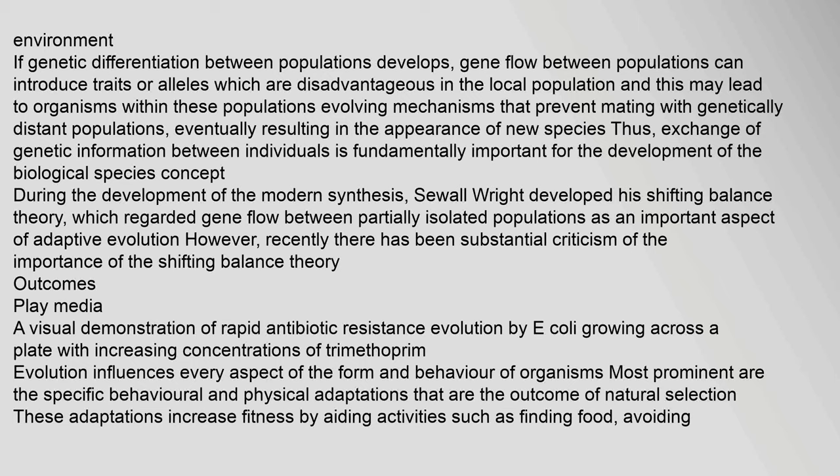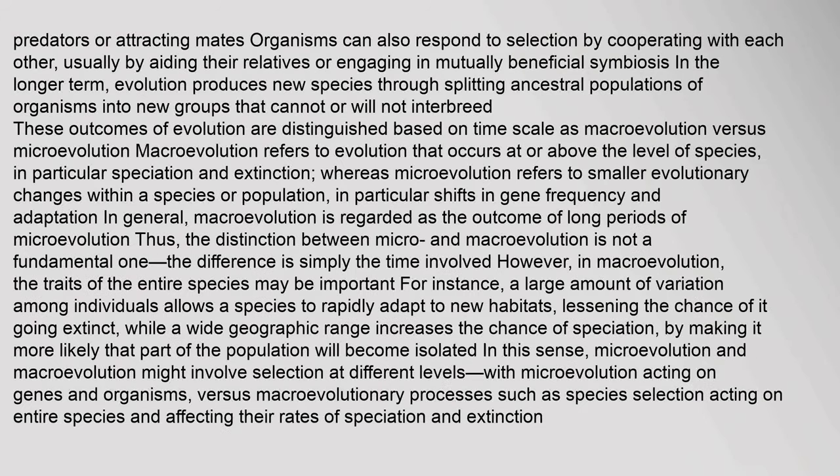Outcomes: Evolution influences every aspect of the form and behavior of organisms. Most prominent are the specific behavioral and physical adaptations that are the outcome of natural selection. These adaptations increase fitness by aiding activities such as finding food, avoiding predators, or attracting mates. Organisms can also respond to selection by cooperating with each other, usually by aiding their relatives or engaging in mutually beneficial symbiosis. In the longer term, evolution produces new species through splitting ancestral populations of organisms into new groups that cannot or will not interbreed.